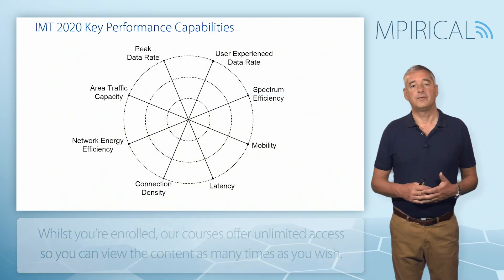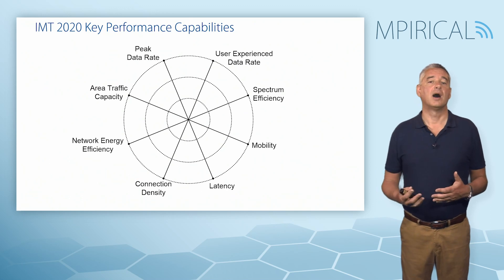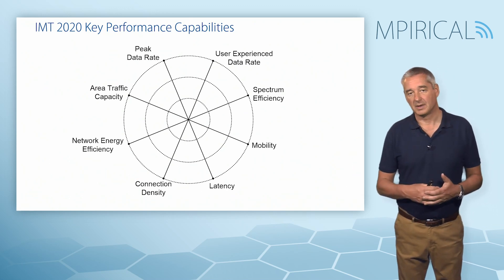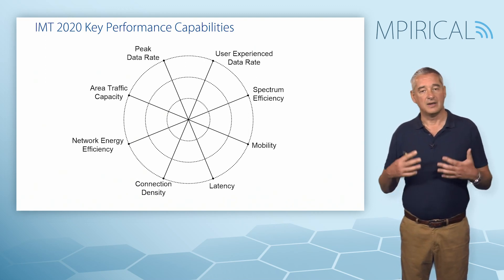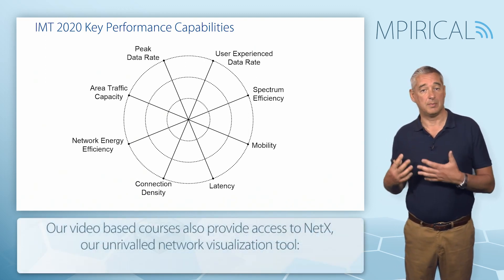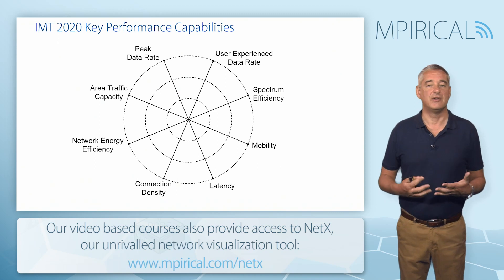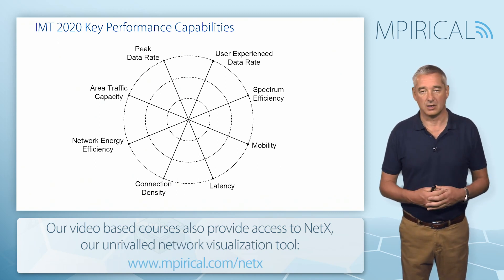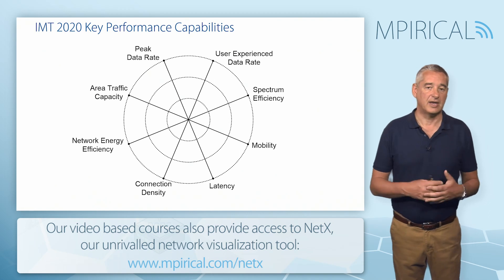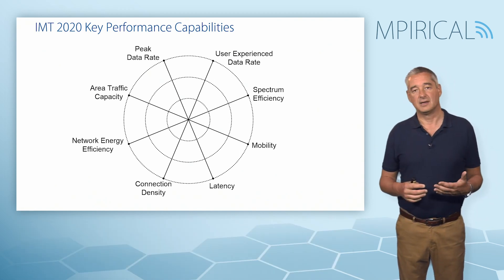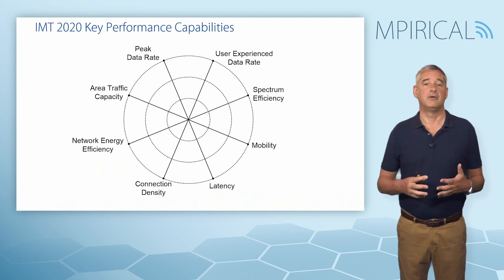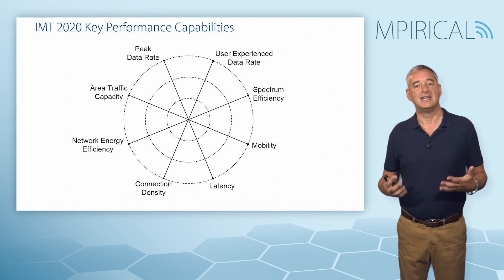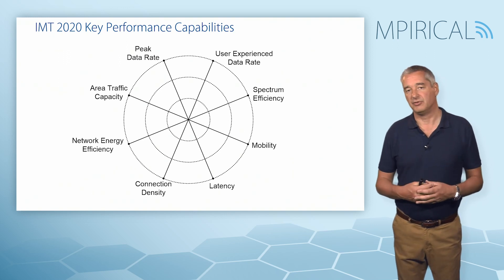Looking at those different use cases, the ITU-R mapped them against eight different performance criteria. Remember, the ITU-R didn't actually define how the network should be built — just what criteria it should achieve to call itself a 5G technology. These eight criteria include the peak data rate, but we should also consider the user experience data rate as a more accurate indicator of the data that you and I would typically receive.